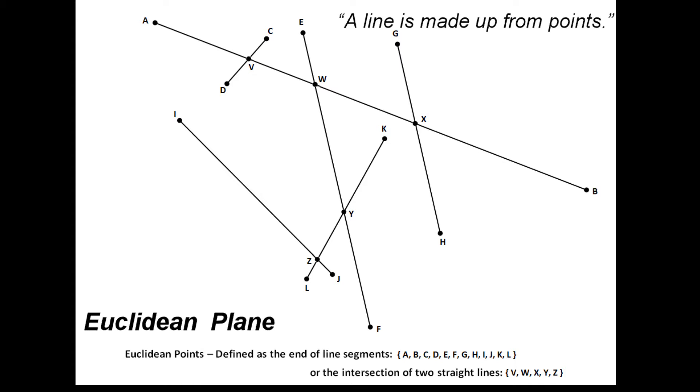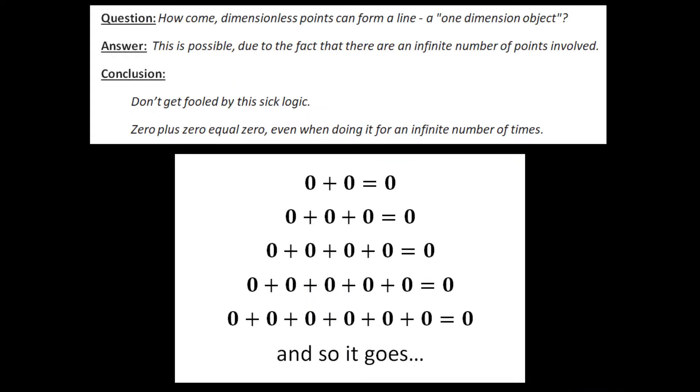The so-called logical conclusion is then derived. A line is made up from points. But how come, these dimensionless points can form a line, a one-dimension object? The answer one gets sometime is. This is possible, due to the fact that, there are an infinite number of points involved.